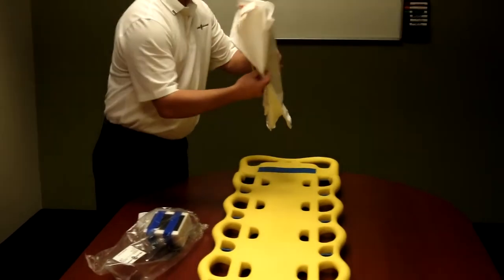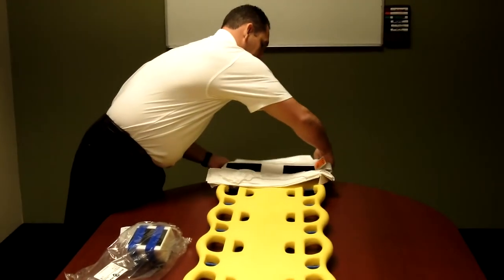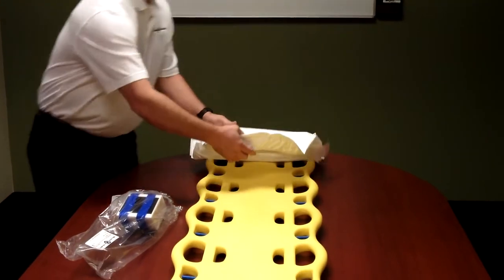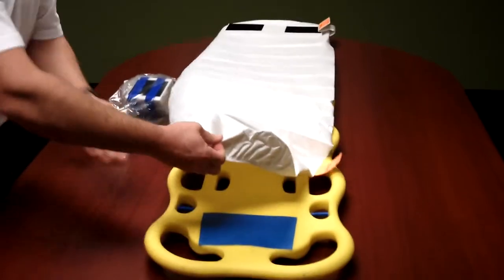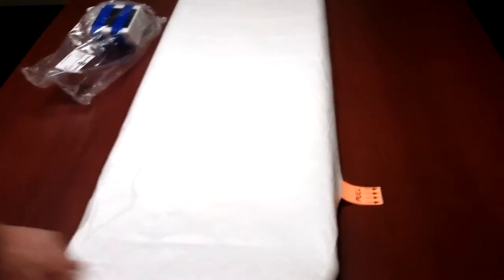You want to take the top of the head base and take the cuffed end and wrap it over the head portion of the backboard. Then you want to take the bottom and wrap the elastic around the base of your backboard.